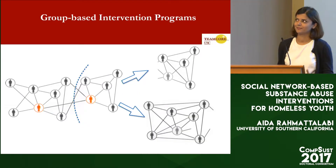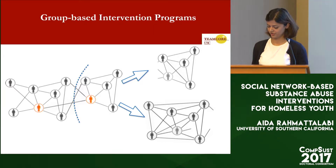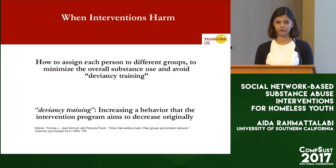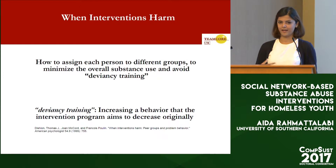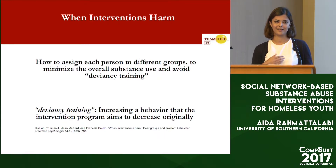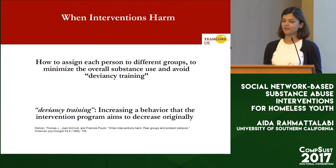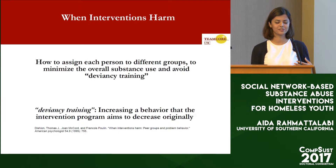For example, something like this can happen. As you can see, two groups are created, some new links are formed, some are cut, and some behavioral changes are observed. The main question is how to assign each node to different groups so that we can minimize overall substance use and avoid deviancy training — a term from social work literature referring to when an intervention that intends to minimize a negative effect ends up maximizing it.